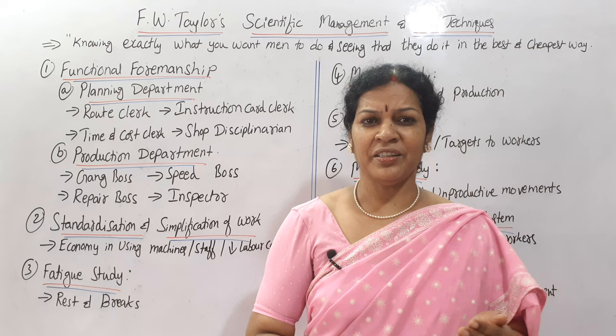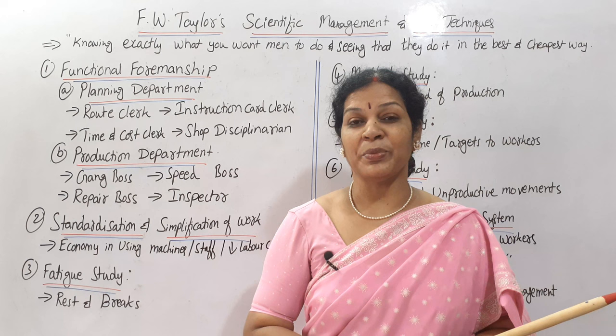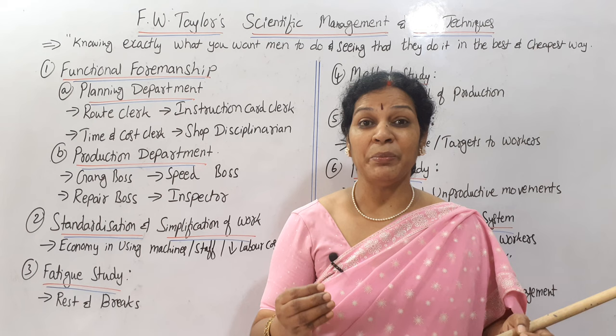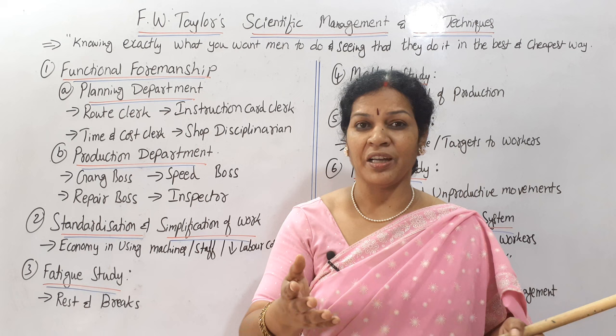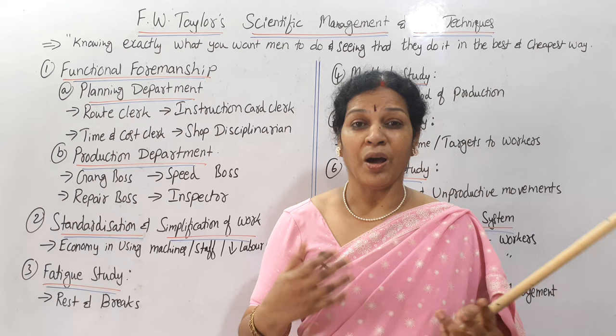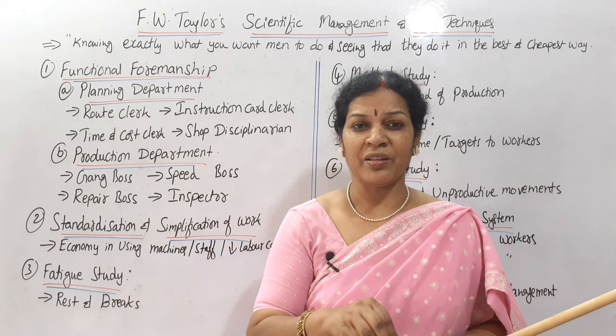FW Taylor, in the initial stage, started his job as an apprentice in a steel factory — a steel-related industry. Later, in the year 1870, he became a chief executive in the same steel industry and implemented new methods of production — how production can be increased and how cost can be decreased. That is the optimum method of any kind of business, and he implemented a few principles called scientific management.